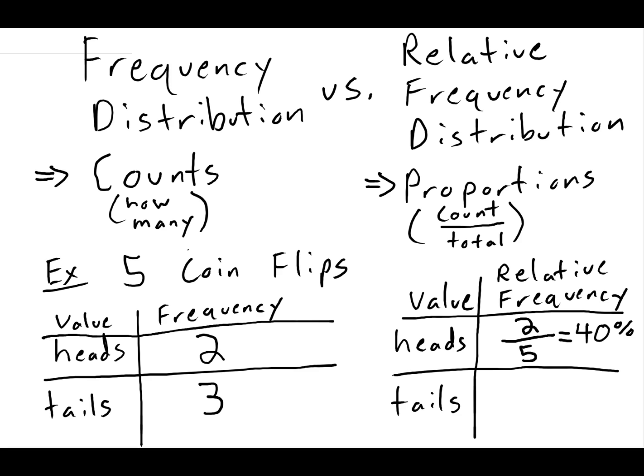Whereas tails, we had three tails out of five. And another way I could write that is sixty percent. And you'll notice that these two percentages here add up to one hundred percent. That's a good sign. That means we accounted for every one of our coin flips. If these numbers didn't add up to a hundred percent, we've missed something. That's a good check for your relative frequency distributions. Your frequencies themselves should always add up to one hundred percent.